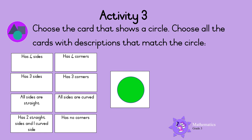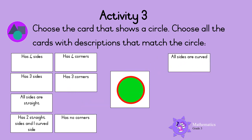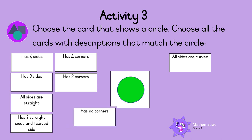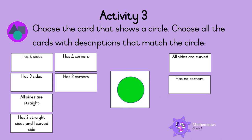Activity 3. Now choose the card that shows a circle. Choose all the cards with descriptions that match the circle. Let's do this one together. Look at the sides of the circle — all the sides are curved. Can you see that a circle has no corners? Well done! So this circle has curved sides and no corners. Make sure you know your shapes. See you next time!